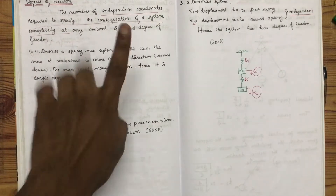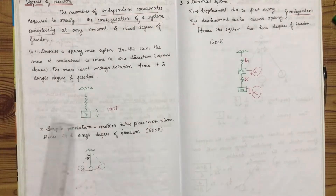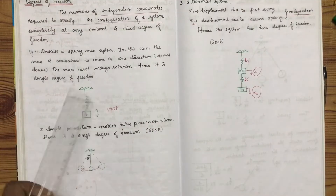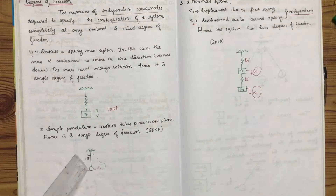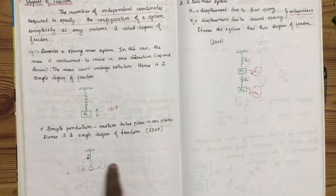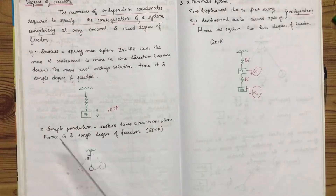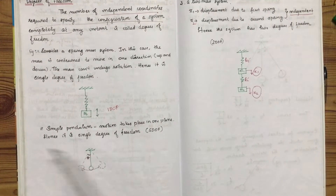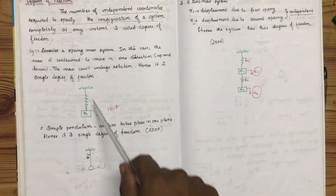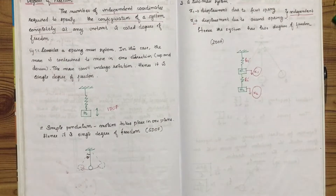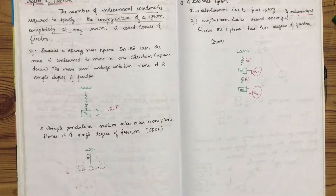In this case, the mass is constrained to move in one direction; the mass cannot undergo rotation. That means this system has one degree of freedom — it is a single degree of freedom system. By using theta, we can represent the definite position of this motion. We require only one parameter, that is one coordinate, to specify the configuration of the system.